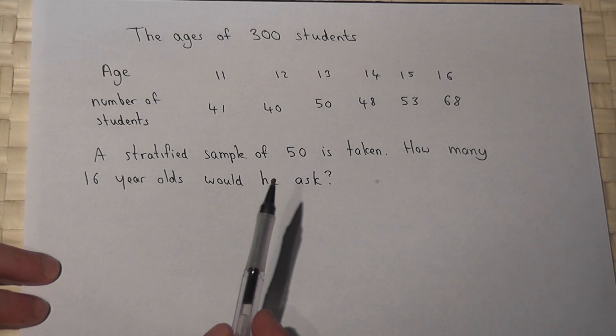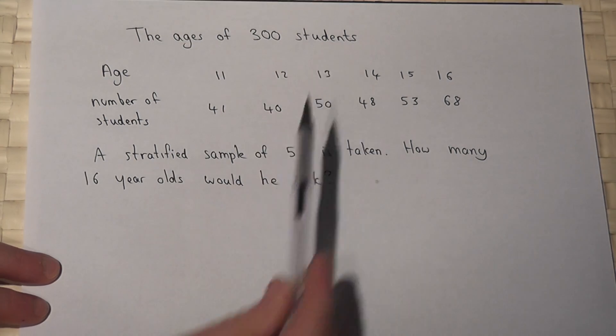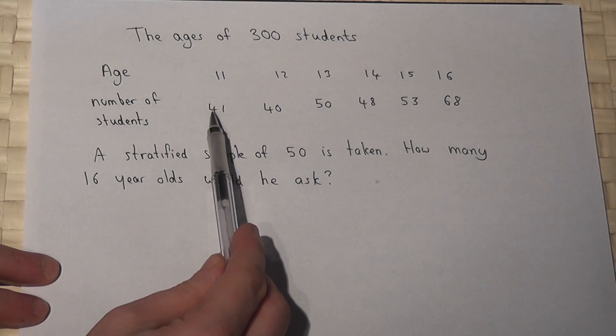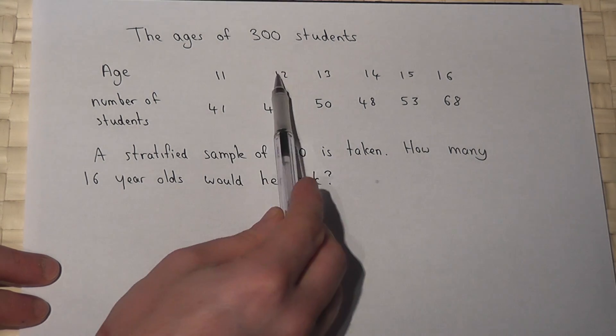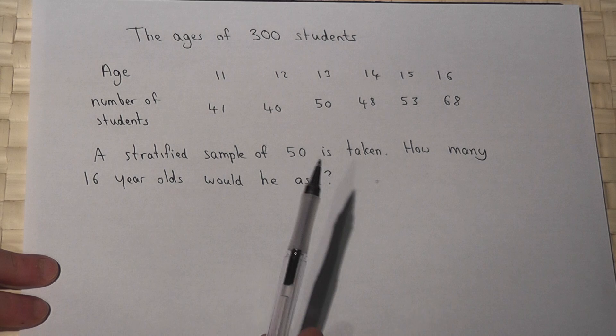This question looks at an example of stratified sampling. In this school there are 300 students all of different ages: 41 eleven-year-olds, 40 twelve-year-olds, and so on.